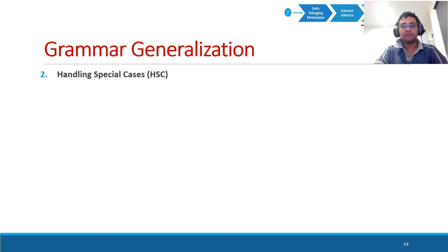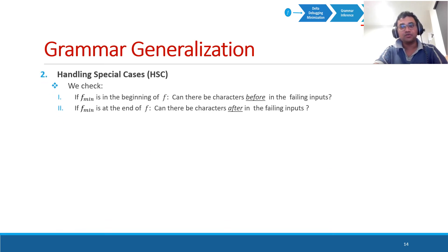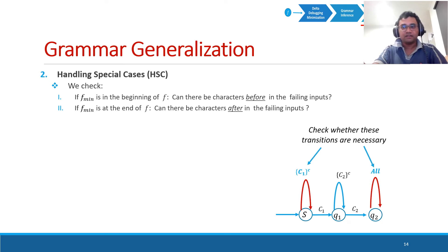Our next generalization step is handling special cases. Under that, we consider these two cases. In other words, if we have a DFA like this, we check whether this kind of complementary self-transitions are possible in the grammar describing the failing inputs. To do that, we generate new test inputs and those are forwarded to the human.